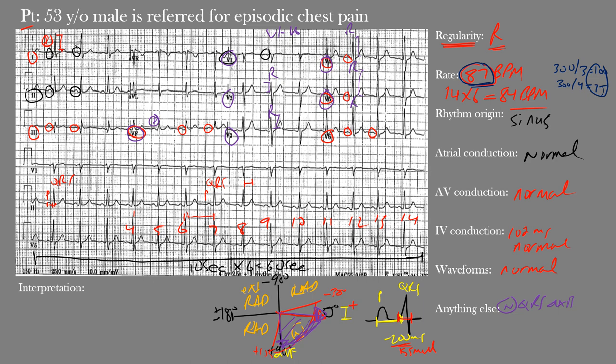Our final interpretation: this is a regular sinus rhythm at a normal rate of 87 beats per minute — within the normal adult range of 60 to 100 — along with normal atrial, AV, and intraventricular conduction, and no other waveform abnormalities. QRS axis and R wave progression are normal. This is normal sinus rhythm. Our 53-year-old male referred with episodic chest pain has an EKG showing normal sinus rhythm — nothing to be too concerned about from this EKG.